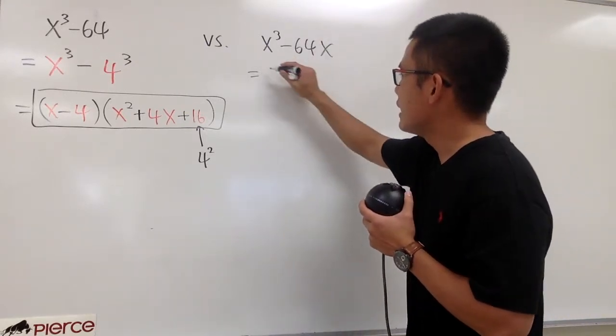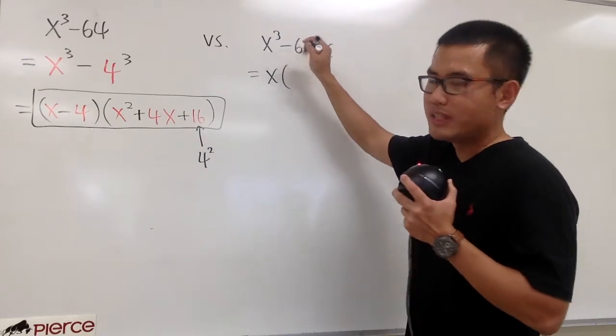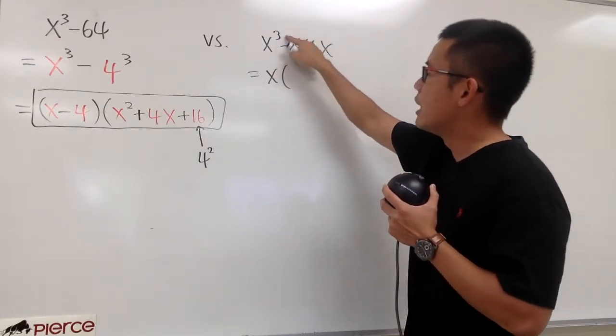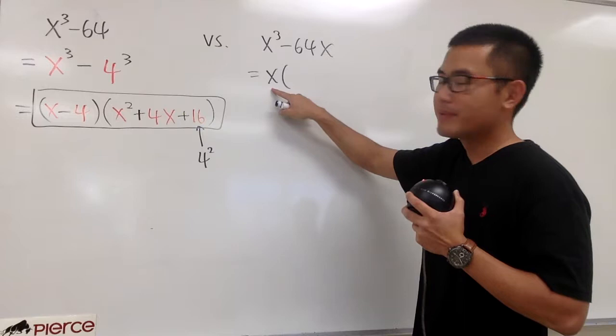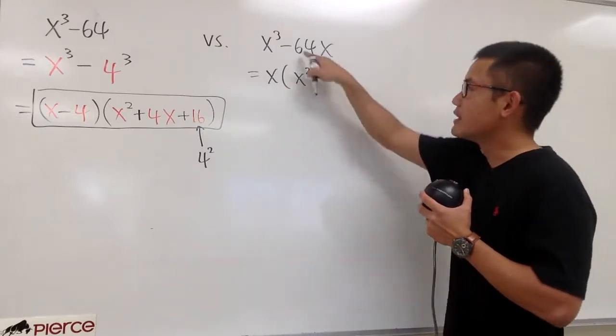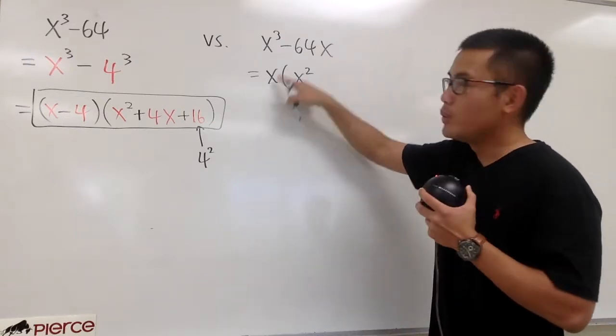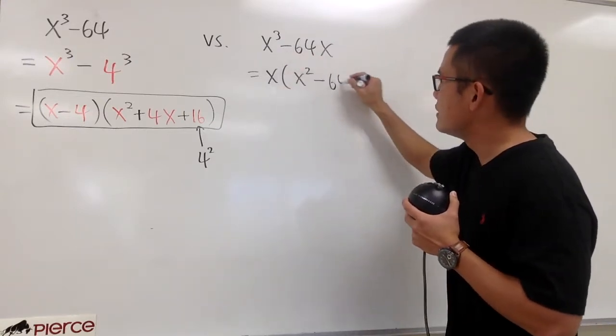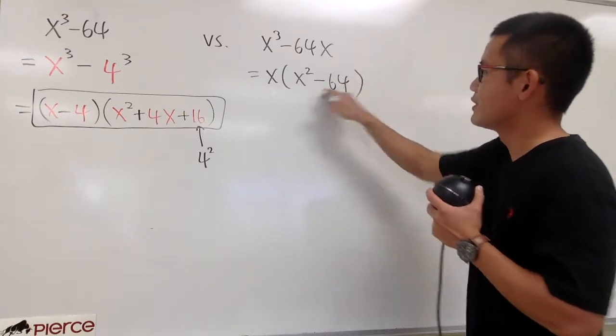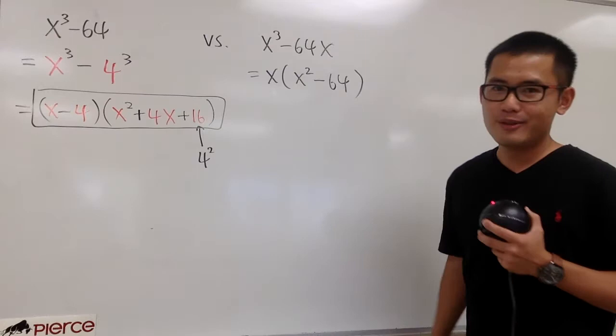So let's go ahead and take out the x first. And for this term, originally, we had an x to the 3rd power, but we took one of them out. So, we will just have x squared left. And for the second term, we took this x out already. That means we will just have minus 64. No more x. Just like this left, in the parentheses. Are we done? No.